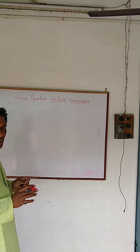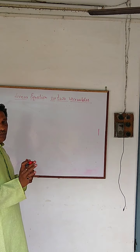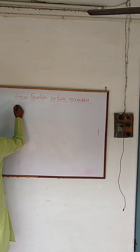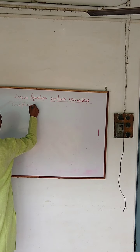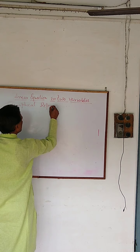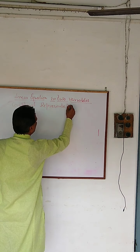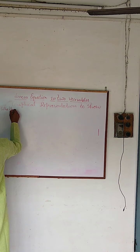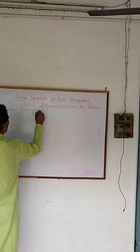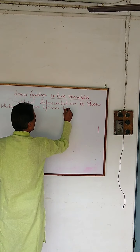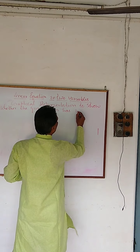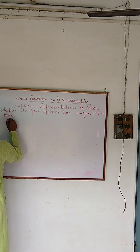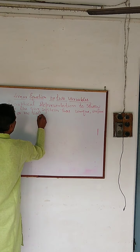I am going to show you graphically. We may also show whether the given system has any solution, through graphical representation — to show whether the given system has a unique solution, infinite solutions, or no solution.